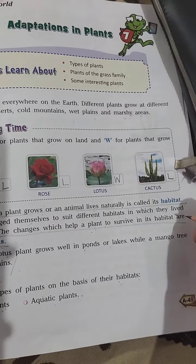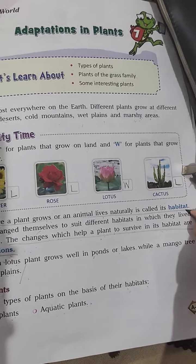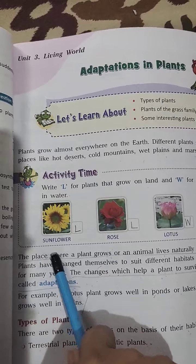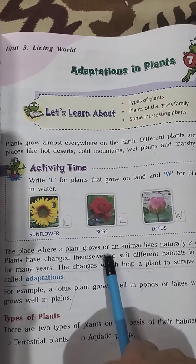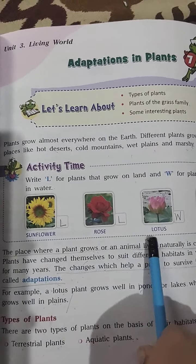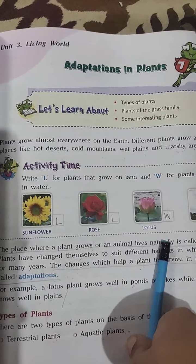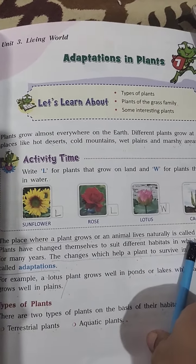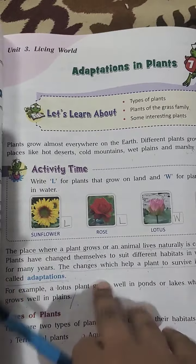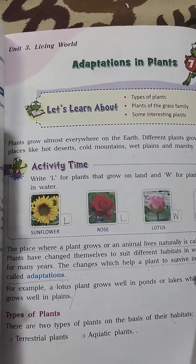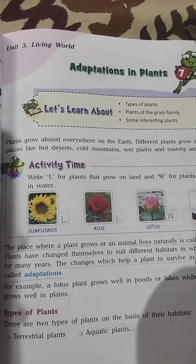Firstly, we discussed what is habitat. The place where a plant grows or an animal lives naturally is called its habitat. Jahan par bhi plant grow hota hai or animal rehta hai, that is their habitat.